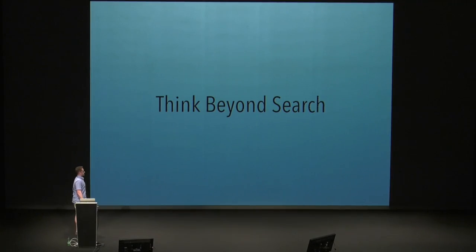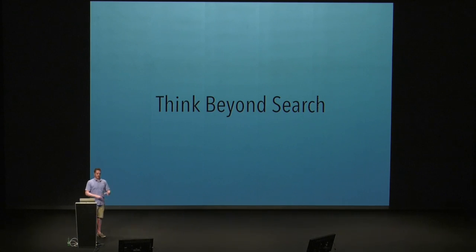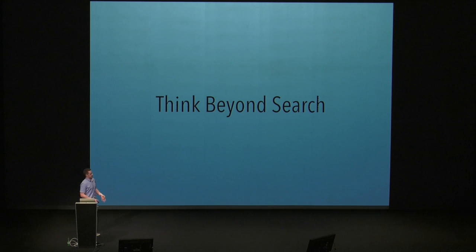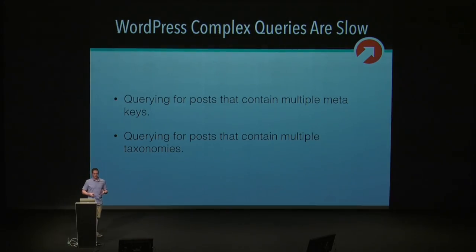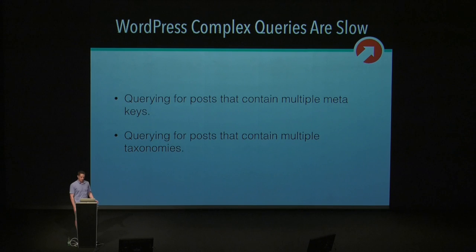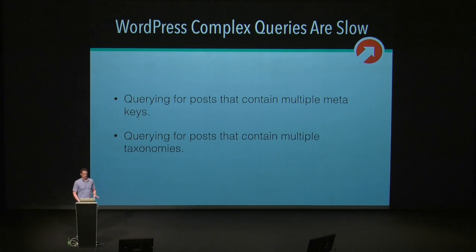I know this talk is filled with the word search, but I want everyone to think beyond search when they're listening to me and coming out of this talk. WordPress complex queries in general can be very slow. By complex queries, I'm talking about multidimensional meta queries and multidimensional taxonomy queries. We're going to get into what exactly that means as the talk progresses.